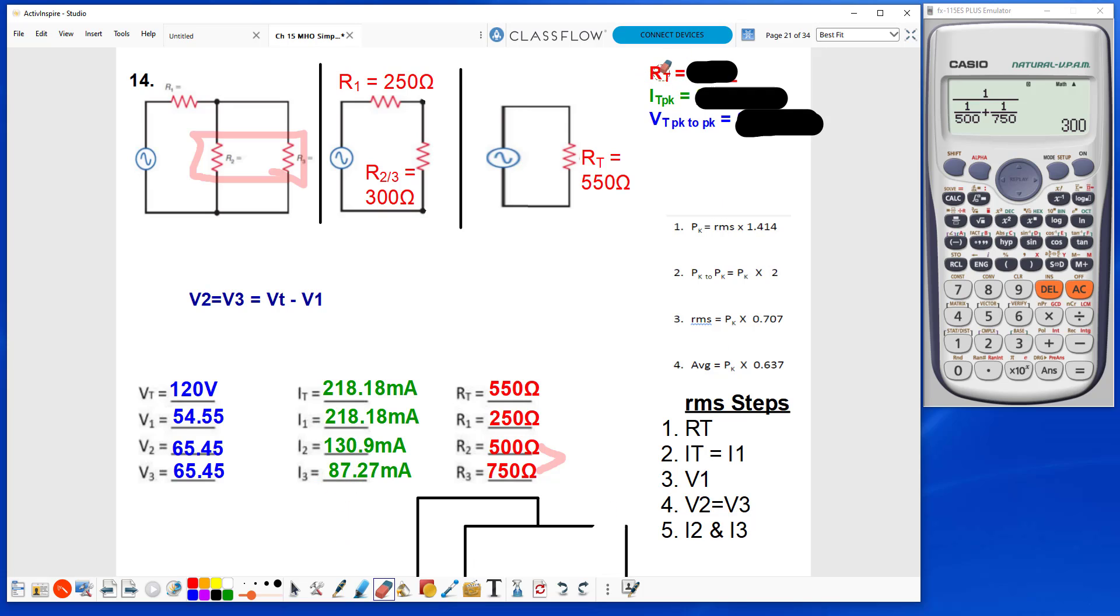All right, first thing I'm asked for for my AC values here is RT, that's just 550 ohms.